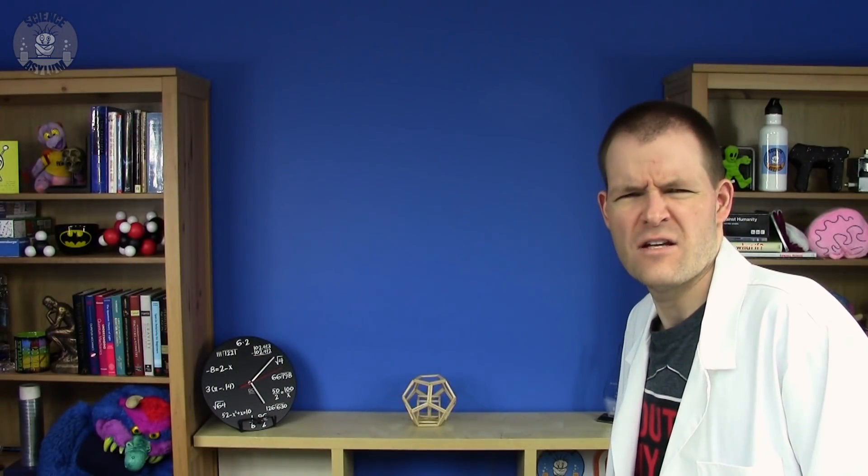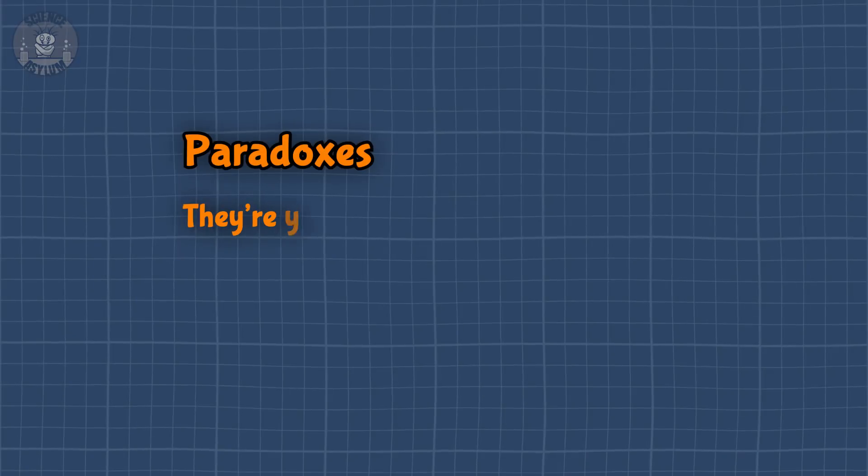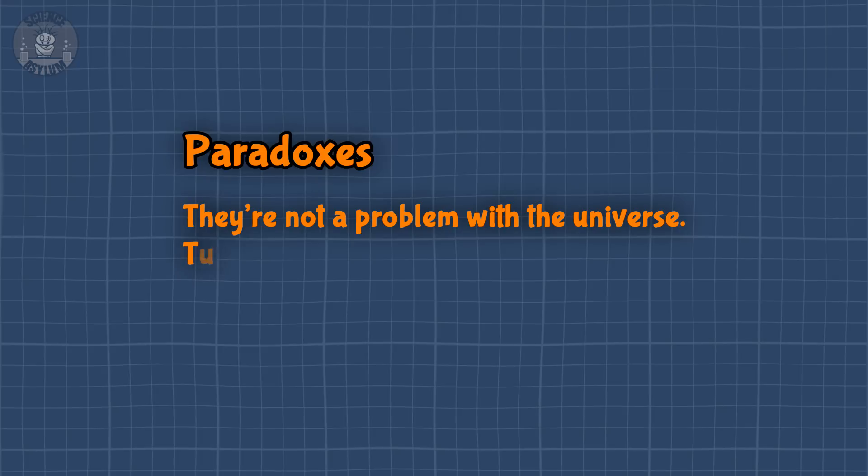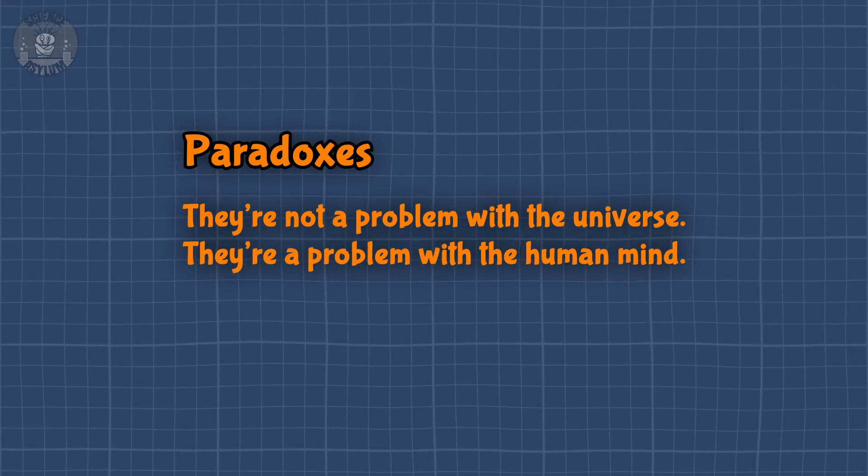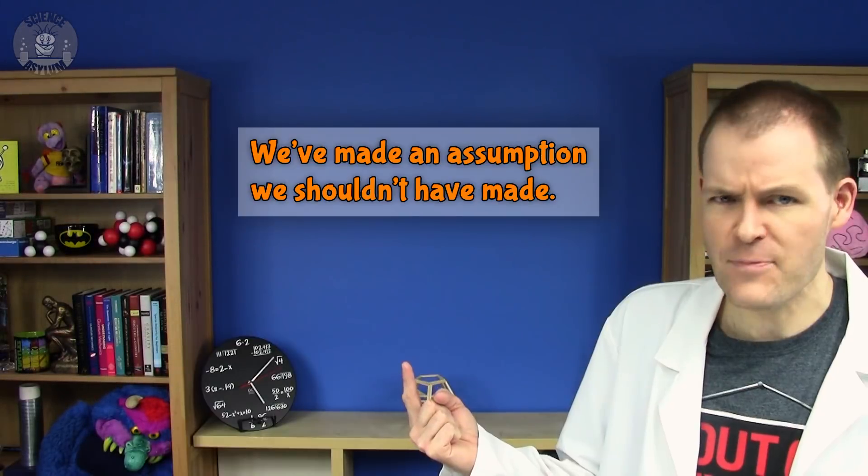Huh, not sure why that happened. I've said it before and I'll say it again. Paradoxes are not a problem of the universe. They're a problem of the human mind. The universe doesn't have a problem. We do. When it comes to paradoxes, there are only two ways we could have made a mistake. Option one, we've made an assumption we shouldn't have made, meaning one of the rules we used isn't actually a rule.